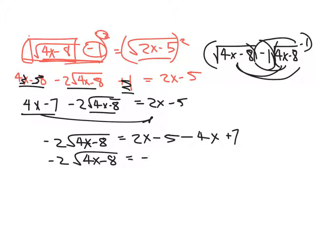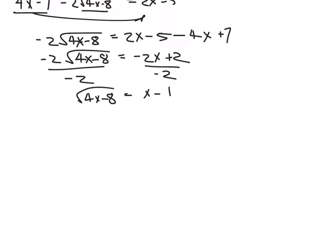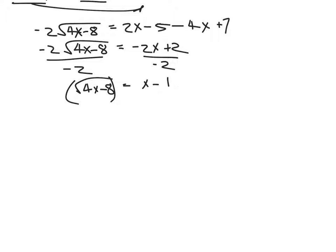All right, so we're trying to get this by itself. So let's get this and move it over here. So that gives me negative 2 square root of 4x minus 8 equals 2x minus 5 minus 4x plus 7. A lot of people get frustrated that I do this long, drawn-out process to do this, but I make fewer mistakes this way. Okay, not that I don't make any mistakes, but it just seems like I make fewer. That would be x minus 1 there.